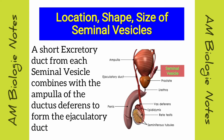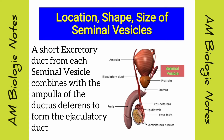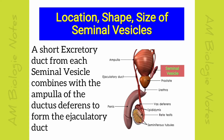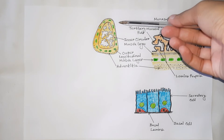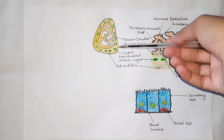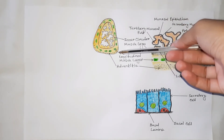A short excretory duct from each seminal vesicle combines with the ampulla of the ductus deferens to form the ejaculatory duct. This is a sectional diagram showing the microstructural details of seminal vesicles.